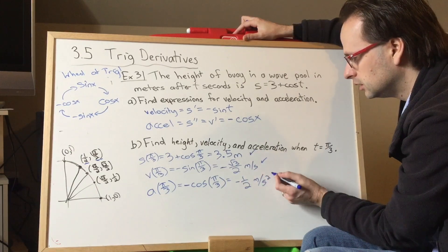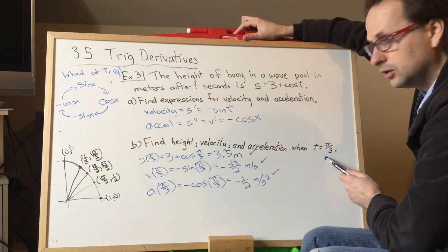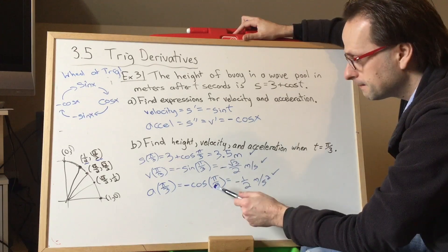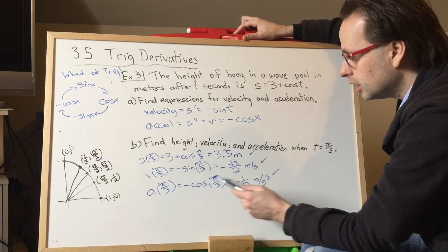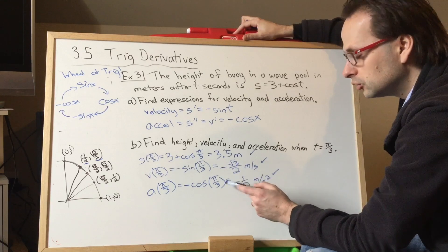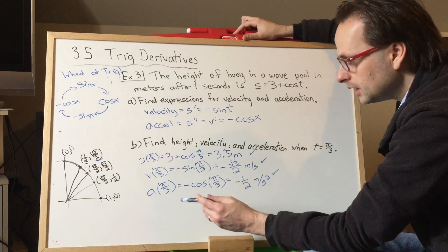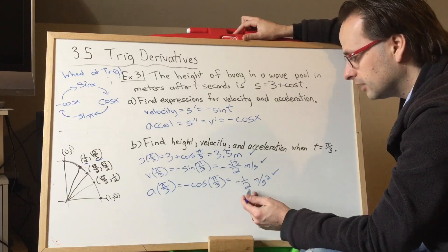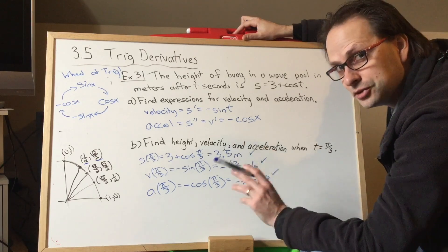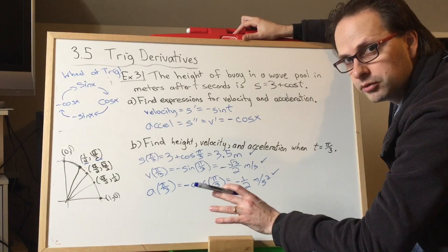So just to be clear: at t equals pi over 3, the buoy is 3.5 meters from the bottom. Its velocity is negative root 3 over 2 meters per second, so it's moving downward at that rate. And its acceleration is negative one-half meters per second squared, so its velocity is decreasing at that rate. That does not mean it's slowing down though — but that's a story probably for another day. The big ideas: the derivative of position is velocity; the derivative of velocity, or second derivative of position, is acceleration.